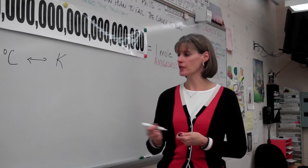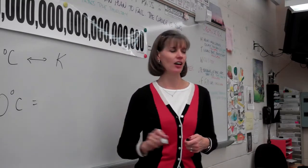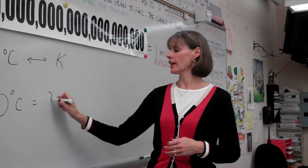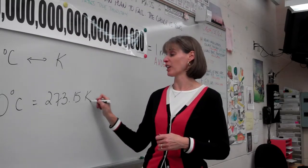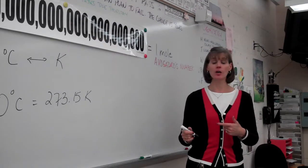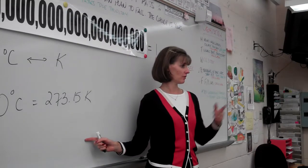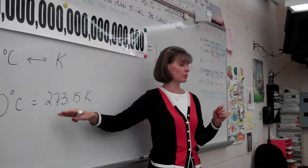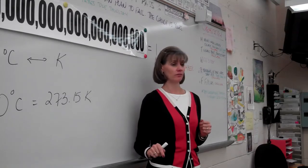but they start at a different spot. Zero degrees Celsius is how many Kelvin? 273.15. Yes. 273.15 if you want to be picky about it. Good job. Because zero on the Kelvin scale is actually what? Freezing point of water. Well,